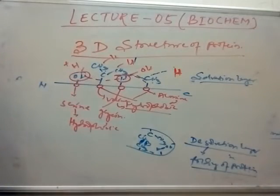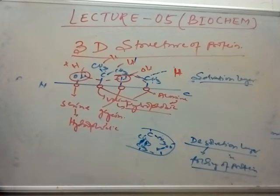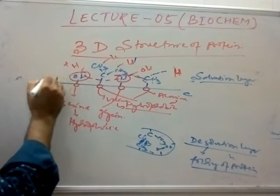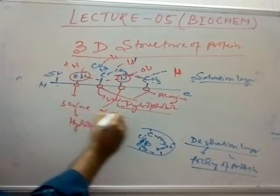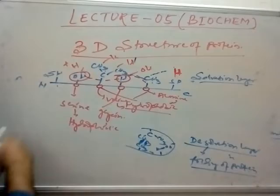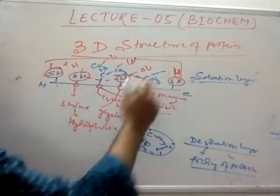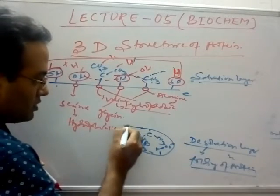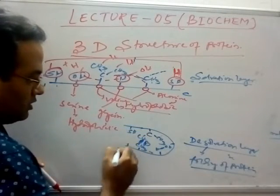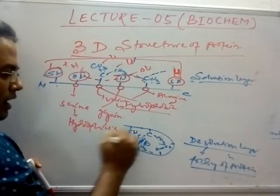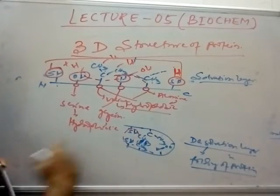In the folding of protein, weak interactions play an important role. Apart from that, there is another component — the disulfide linkage — which plays a very important role. Suppose there is one cysteine with side chain –SH and another cysteine also with an –SH group; these two –SH groups can interact with themselves to form a disulfide linkage.